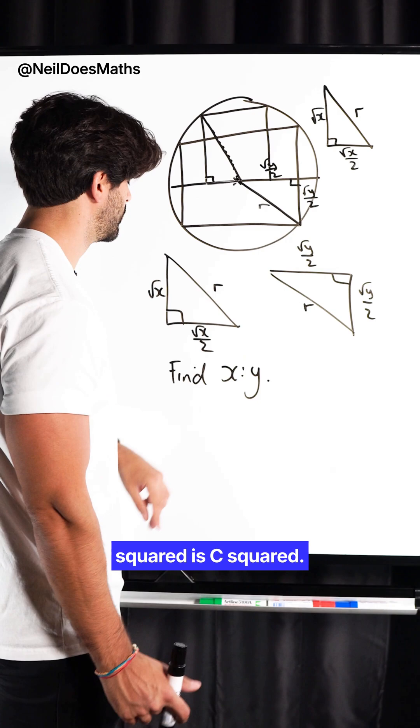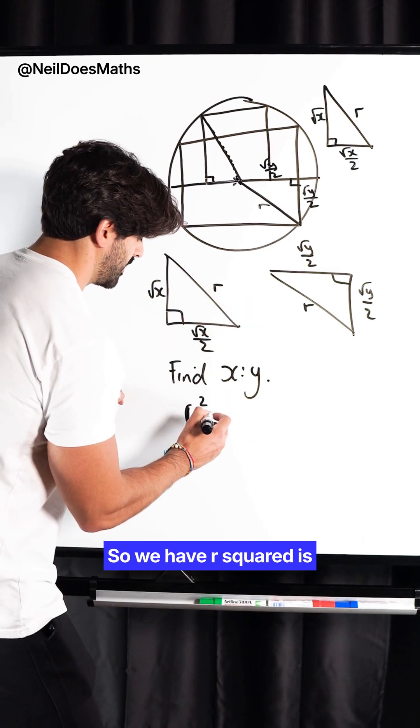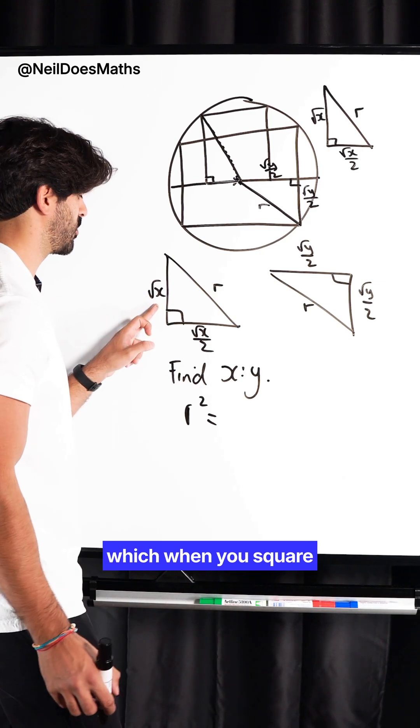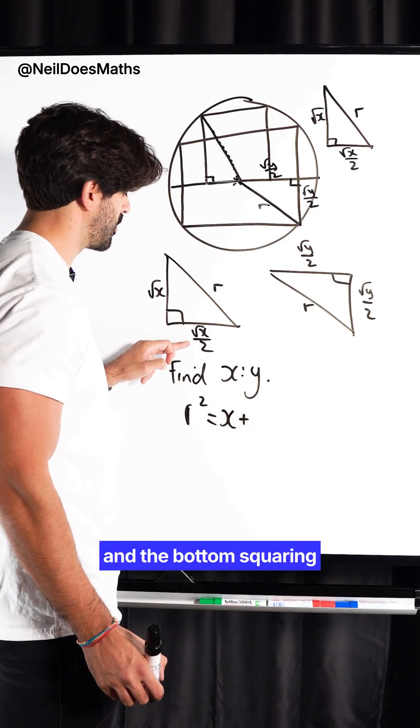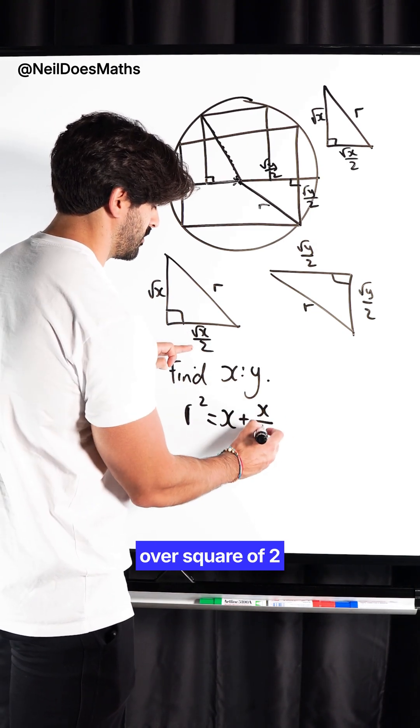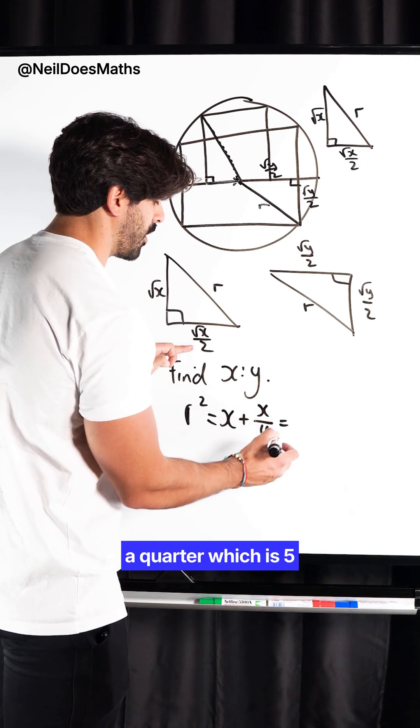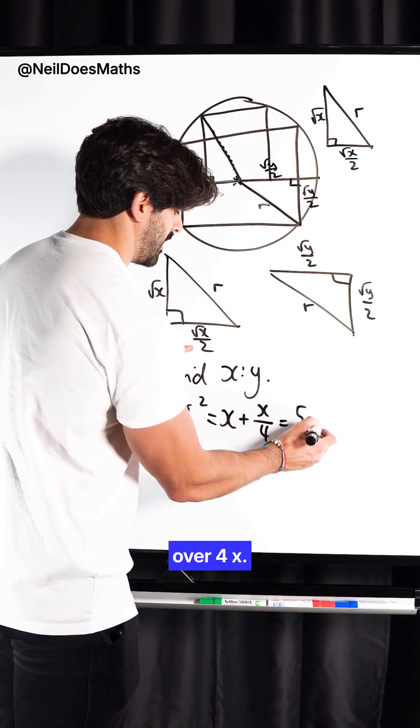A squared plus B squared is C squared. So, we have R squared is equal to this squared, which when you square that is just X, plus when you square this, you square the top and the bottom, squaring that is just X over 4. This is 1 plus a quarter, which is 5 over 4, X.